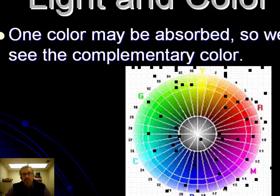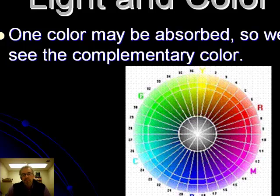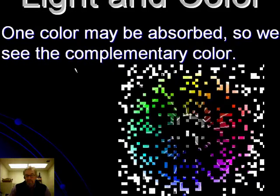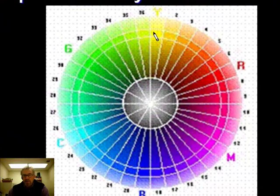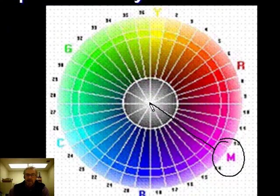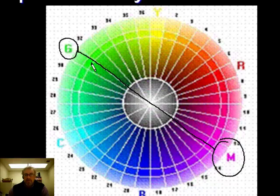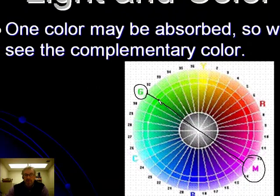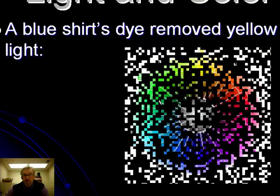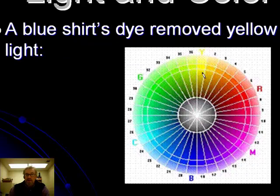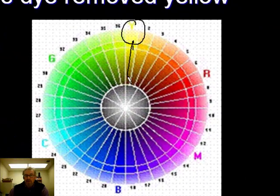A third reason could be that the light is interacting with matter such that one color is absorbed. When that happens, the spectrum becomes unbalanced and we see what's called the complementary color. Looking at an artist's color wheel: if we see something that looks magenta, it's because green — the color 180 degrees across — is being removed by the dye in whatever we're looking at. A blue shirt looks blue because yellow was removed from the spectrum.